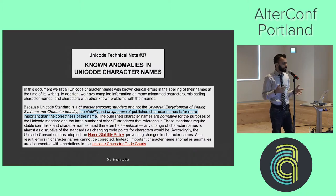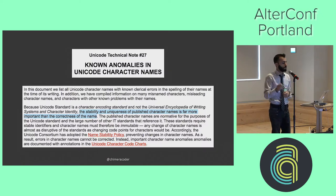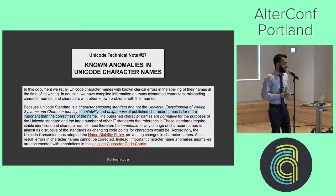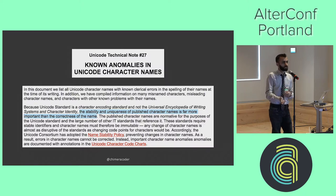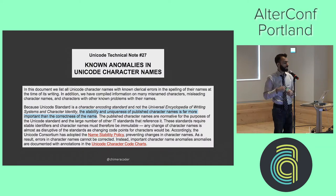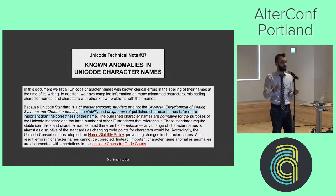Now, in their defense, languages are a really hard problem, and the Unicode Consortium doesn't pretend they're perfect — they even publish a running list of known anomalies in character names. And they say that the stability and uniqueness of published character names is far more important than the correctness of the name. From an engineering perspective that sounds sensible, because changing things means breaking code that depends on those assumptions. But that's really problematic because it means authenticity has taken a backseat to implementation convenience. We're admitting straight up that Unicode no longer represents the way that native speakers actually write and talk about their language — which is a huge problem.